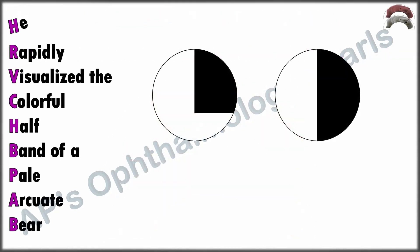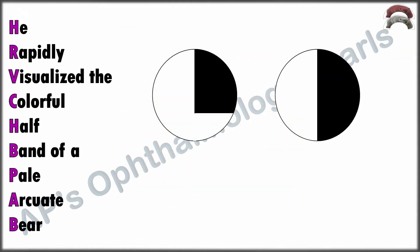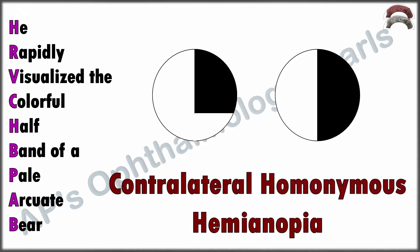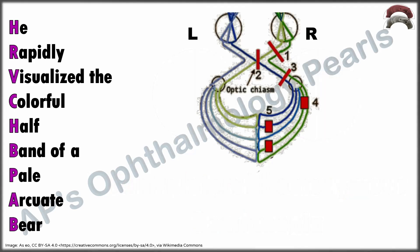'He' stands for hemianopia. In an optic tract lesion, it is homonymous and contralateral to the side of the lesion. In addition, though a complete hemianopia can occur, tract lesions generally tend to be highly incongruous. This picture shows an incongruent right homonymous hemianopia due to a left optic tract lesion.